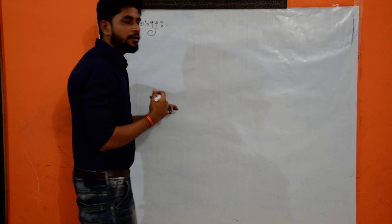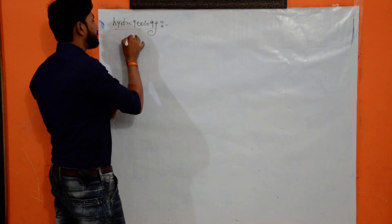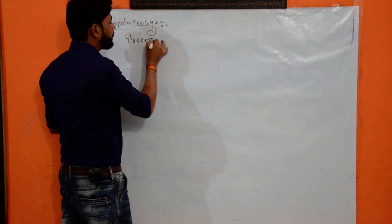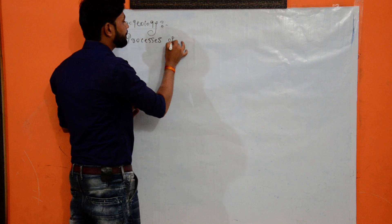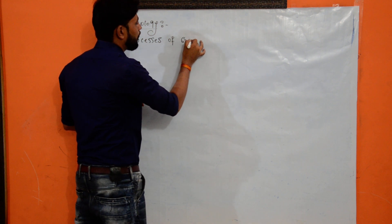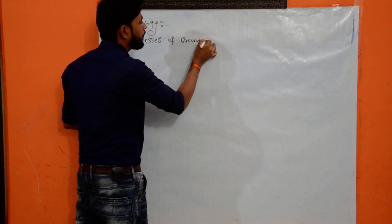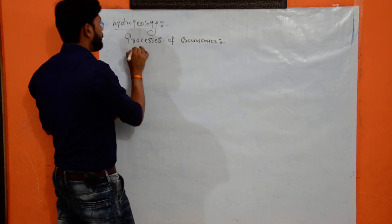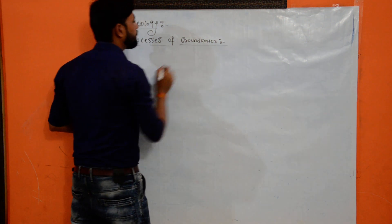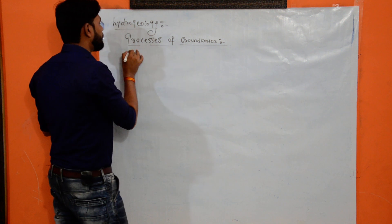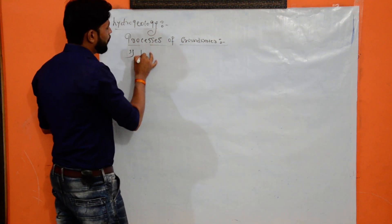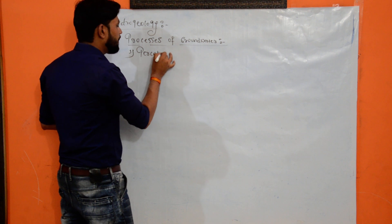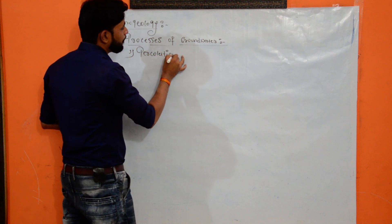Before occurrences, first we will deal with the processes. Processes of groundwater. So, processes of groundwater in the hydrological cycle — number one process is percolation.